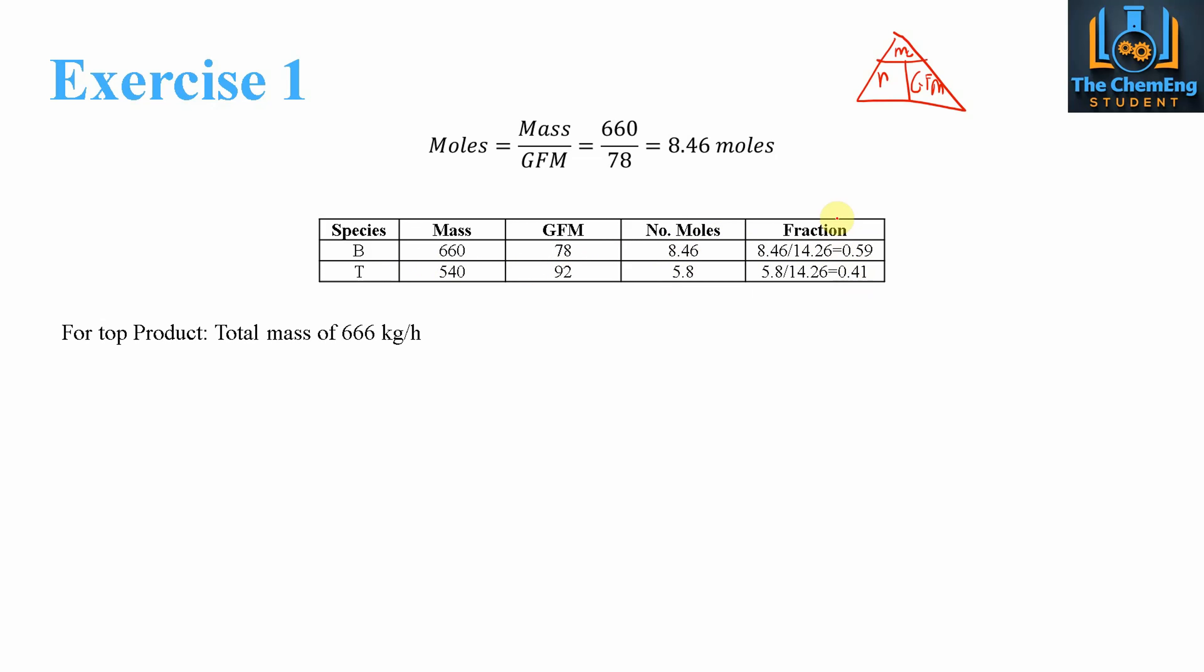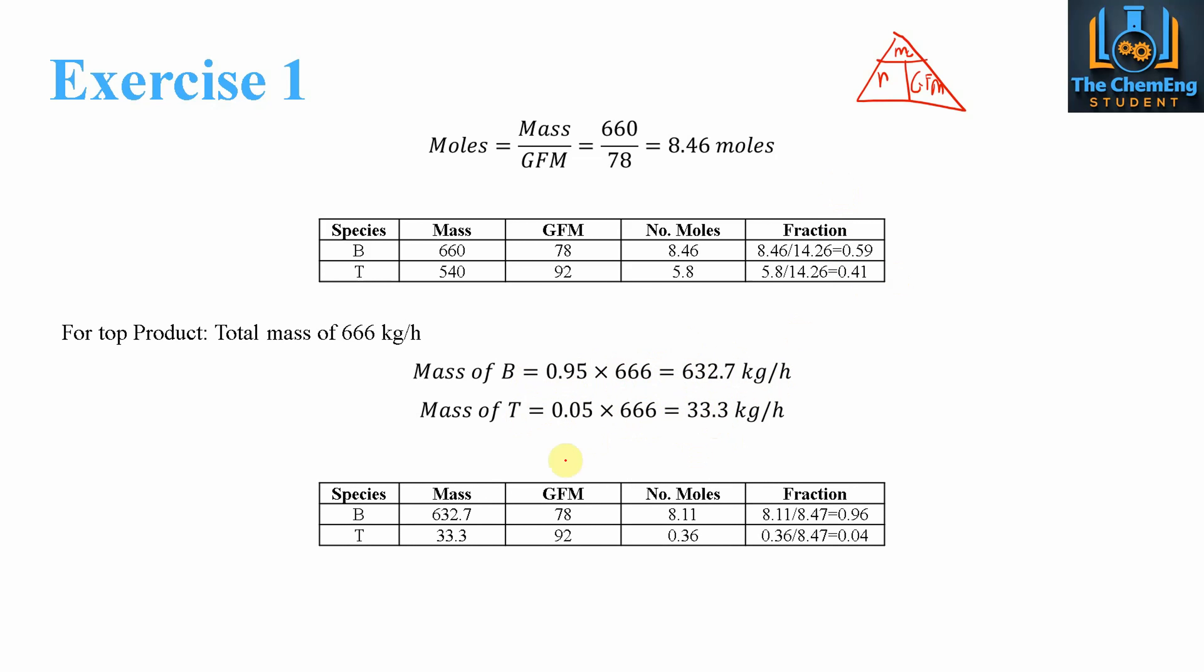Now for the top product, the total mass was 666 kilograms per hour. So what we can then do is say that we have 95% of benzene at the top, so we multiply that by 666. That will give us 632.7. And then we can do 0.05 multiplied by the flow rate, it will give us 33.3. So then we can perform the same system again for the top product. So we know the mass flow rates, we know the GFMs, we can calculate the number of moles using that equation. And then we work out the total, so that would be 8.47.